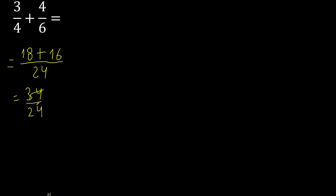It can be simplified because it can be divided by the same number — divided by 2 — giving 17 over 12.